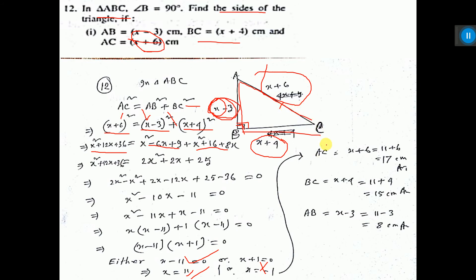So AC is equal to what? x plus 6. Put the value of x, get the AC value. BC is given as x plus 4. Put the value of x and get the result. AB value is x minus 3. Put the value of x and get the result. That's all.